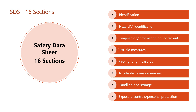The Safety Data Sheet, SDS, typically includes the following 16 sections: 1. Identification of the substance, mixture, and of the company undertaking. 2. Hazards identification. 3. Composition information on ingredients. 4. First aid measures. 5. Firefighting measures. 6. Accidental release measures. 7. Handling and storage. 8. Exposure controls.